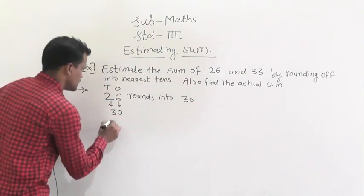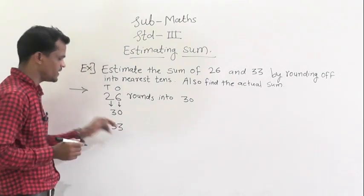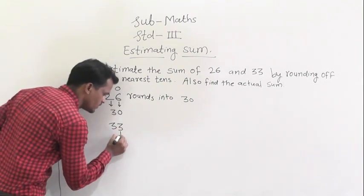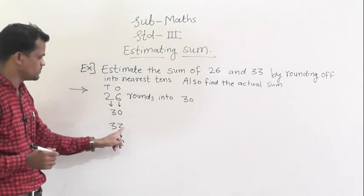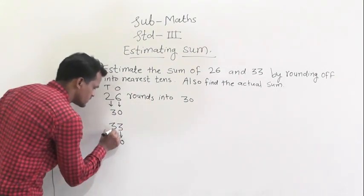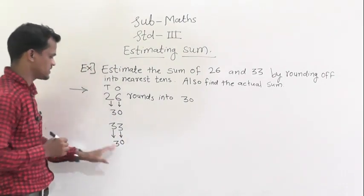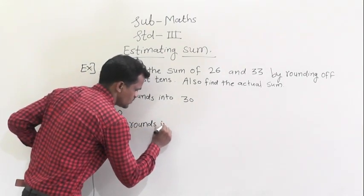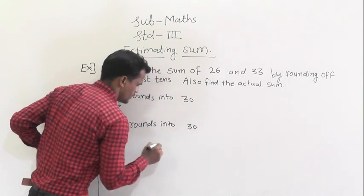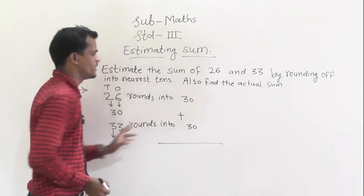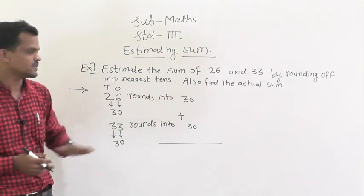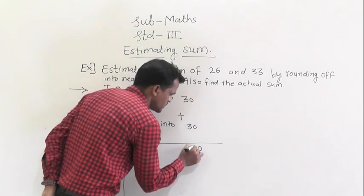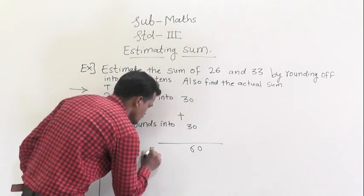Next, round 33 — the one's place digit is 3, which is less than 5, so we round down. Write 0 at the one's place and keep the ten's digit as it is, so 33 rounds to 30. Now add the rounded numbers: 30 plus 30 equals 60. This is the estimated sum.